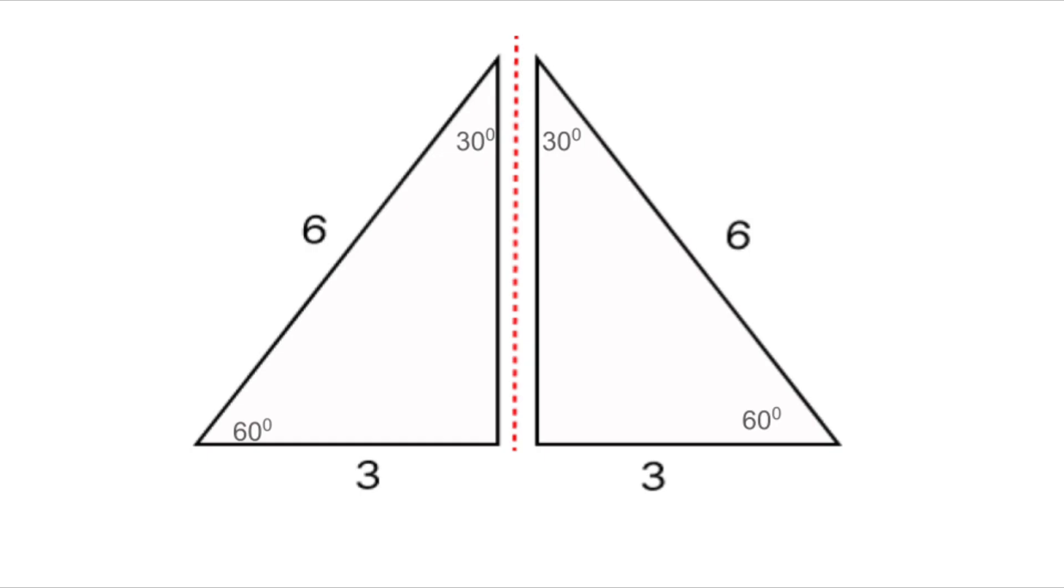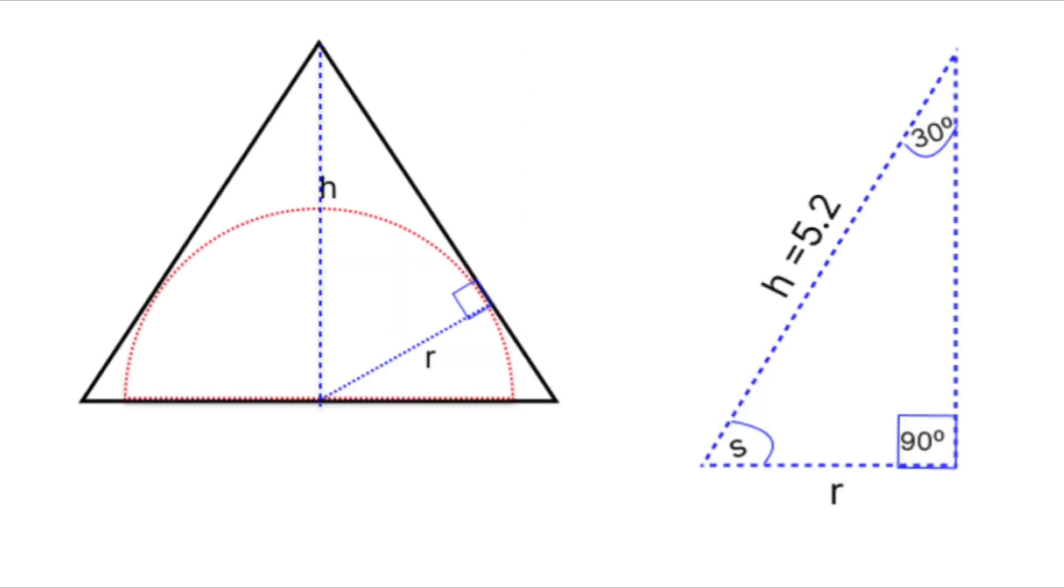This is exactly the setup where SOHCAHTOA becomes our best friend. We've got the sides, we've got the angles, and now we can use trigonometry to connect everything and solve for the radius.